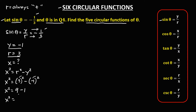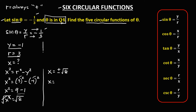So x² = 9 − 1 = 8. Taking the square root, x equals positive or negative square root of 8. Since theta is in Quadrant 4, in Quadrant 4 y is negative and x is positive, so x is positive square root of 8.